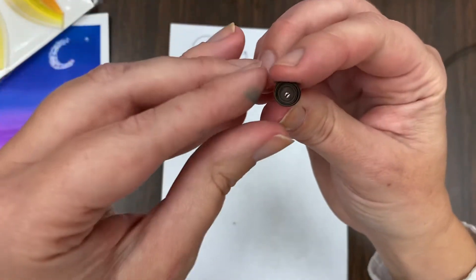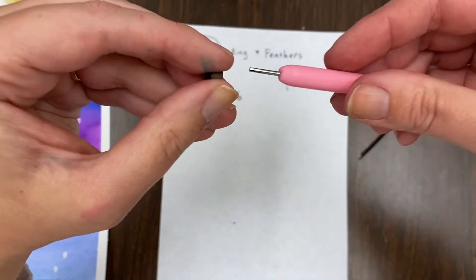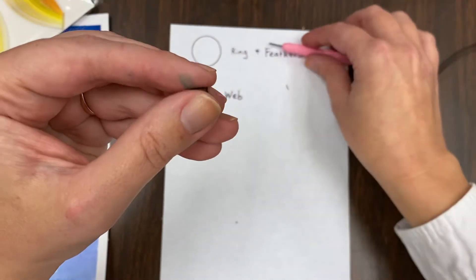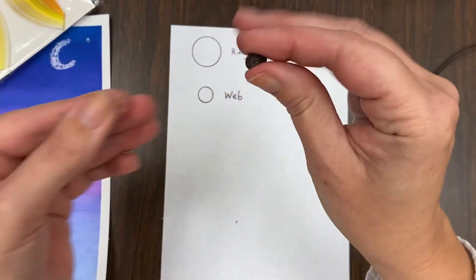When you get to the end, it looks like this. And just pull that out. You can roll it in between your fingers to kind of make it stay.